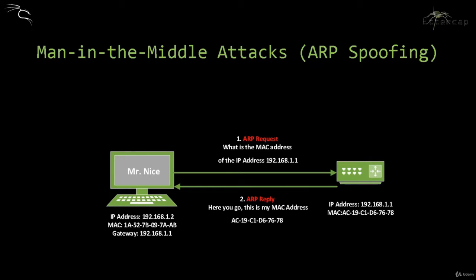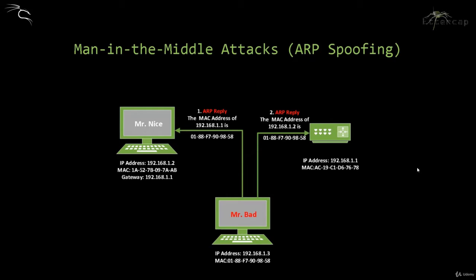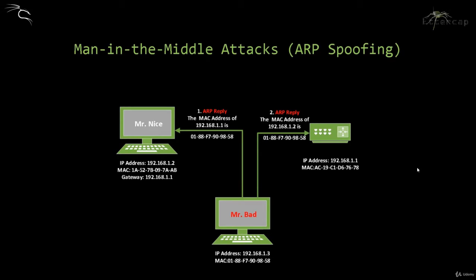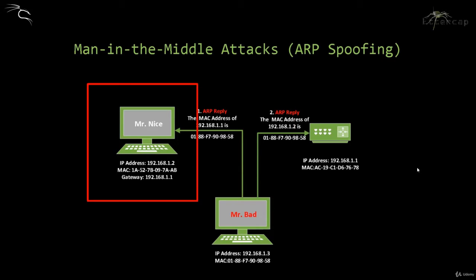The computer concerned replies with its MAC address, and this reply is cached on Mr. Nice's machine — this is the situation under normal circumstances. In abnormal circumstances, Mr. Bad, who is the malicious user, will have access to the network. It's very important to have access to the network because this attack only works this way. He will then send ARP replies saying that his MAC address is associated with the IP ending in dot 1 dot 1, and also that his MAC address is associated with the IP ending in dot 1 dot 2.